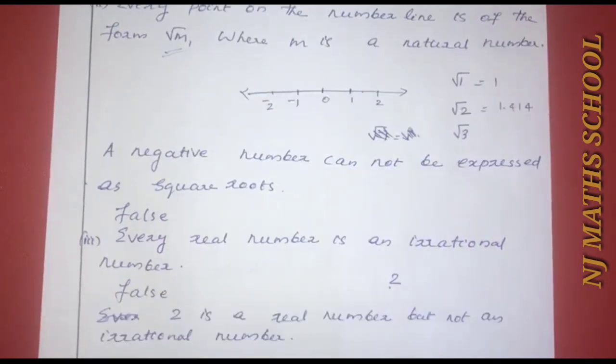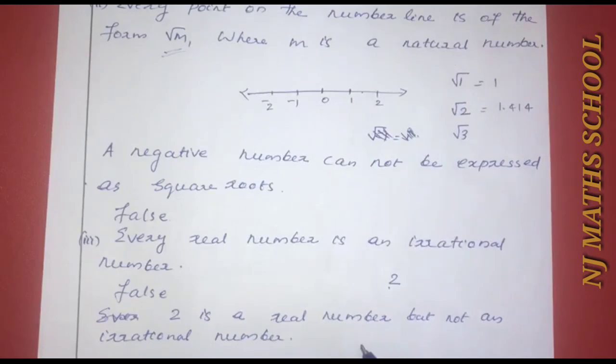The justification: 2 is a real number but not an irrational number. Every irrational number is a real number, but not every real number is an irrational number. The statement is false.